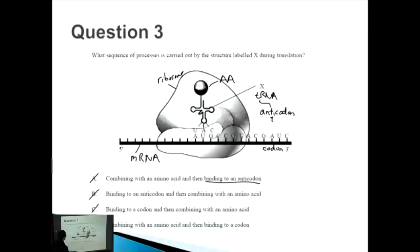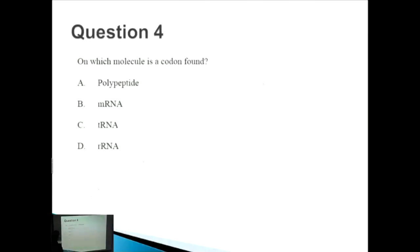Question four: on which molecule is a codon found? We mentioned before that tRNA has the letter T in it, so tRNA has the anticodon, and the one that's left over is mRNA. mRNA has the codon.